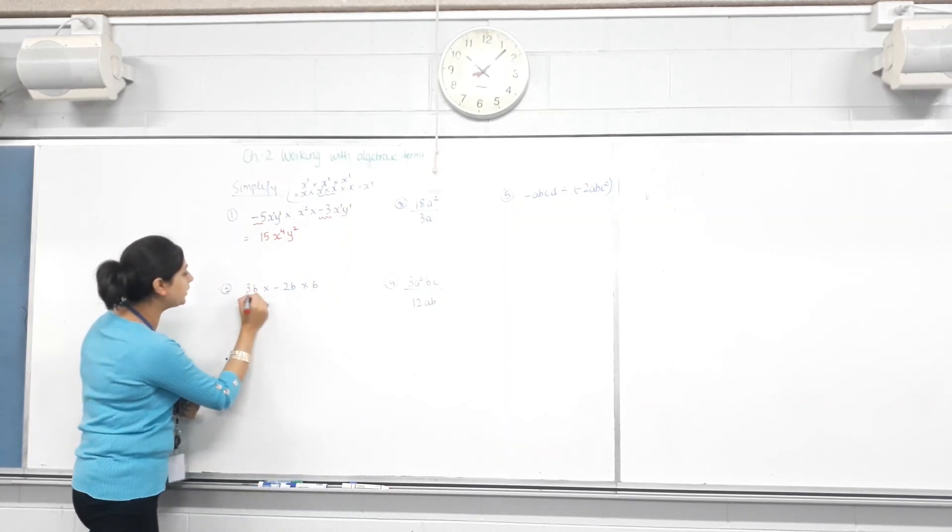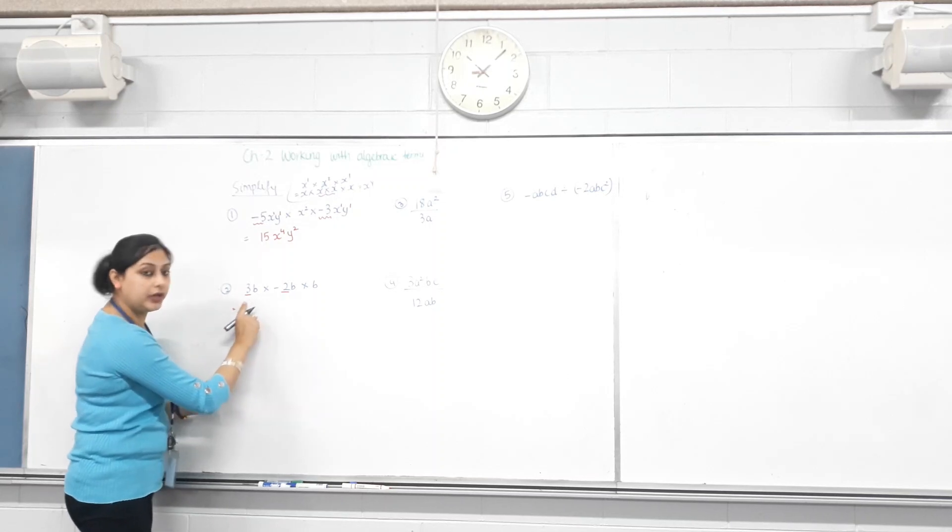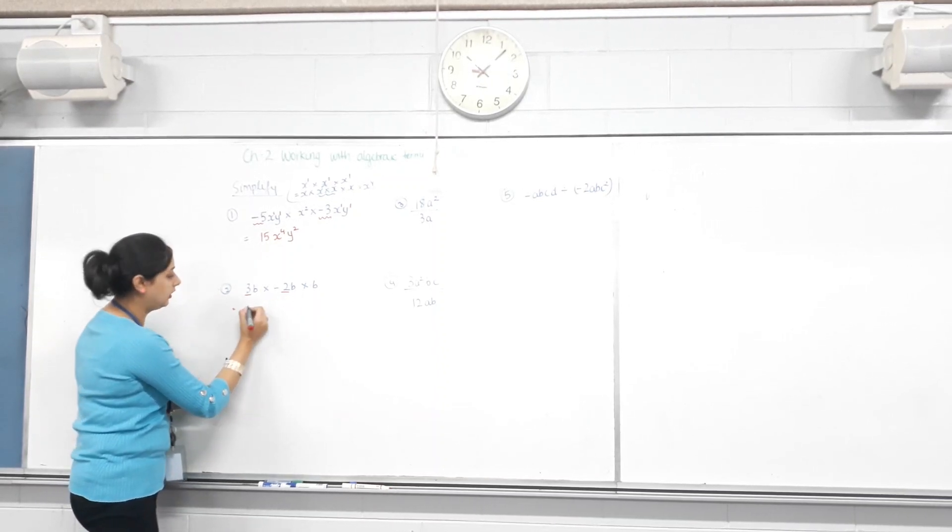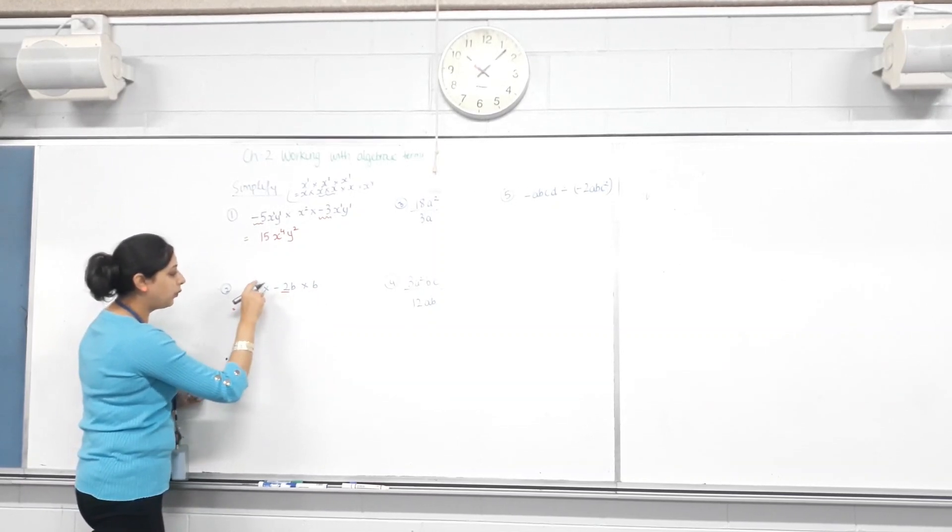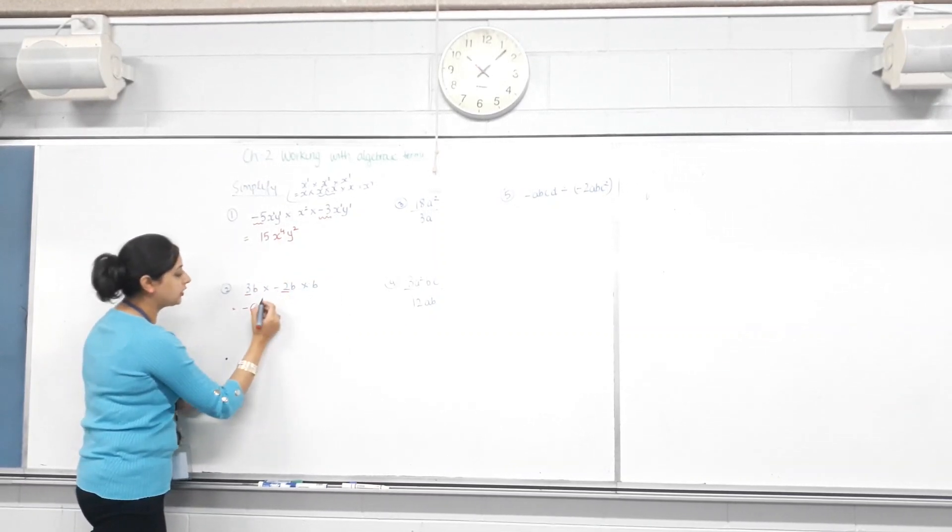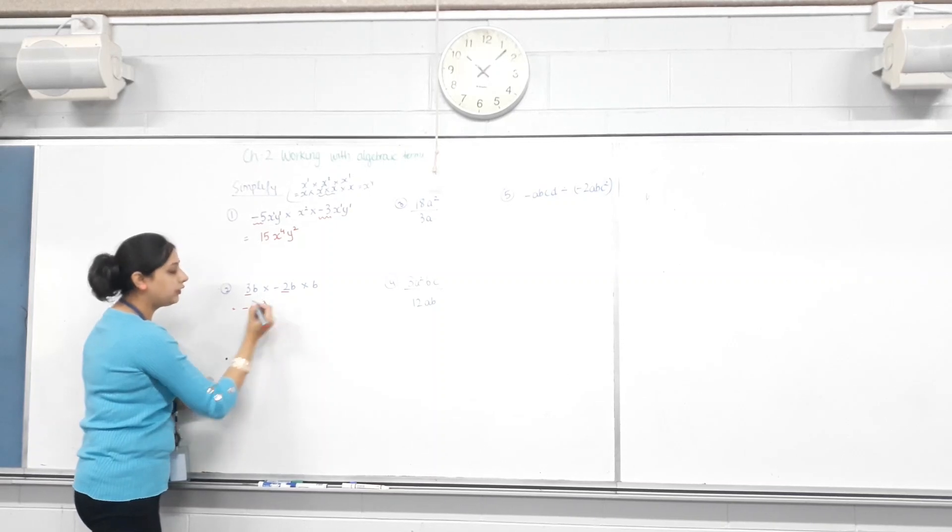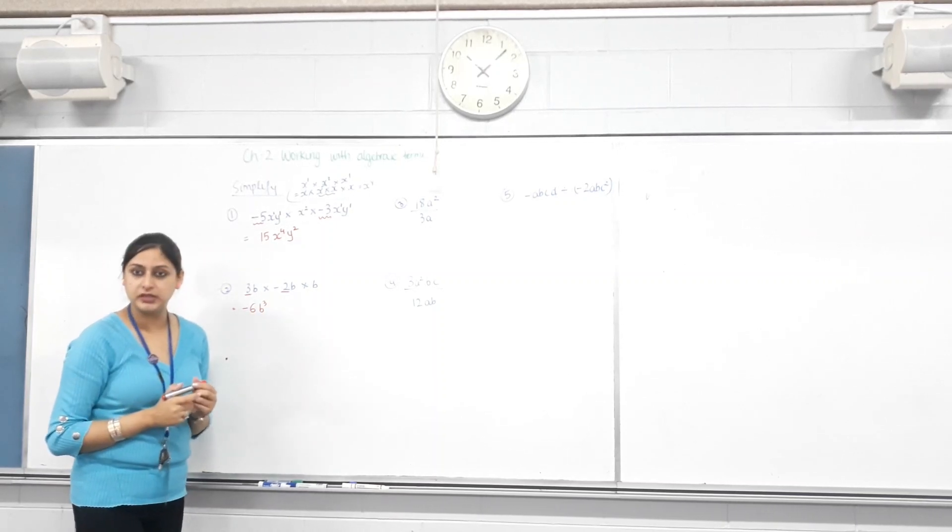Next one. Again, numbers with numbers. Three times negative two is negative six. Now, how many B's do we have? One, two, three. So, B to the power of three. That's it. Make sense?